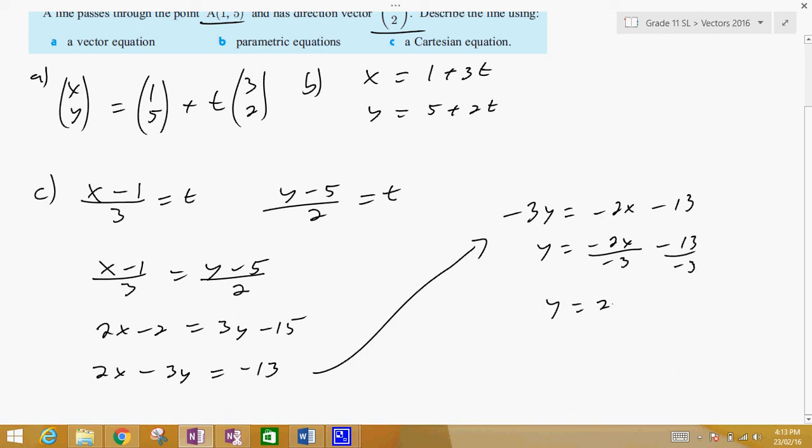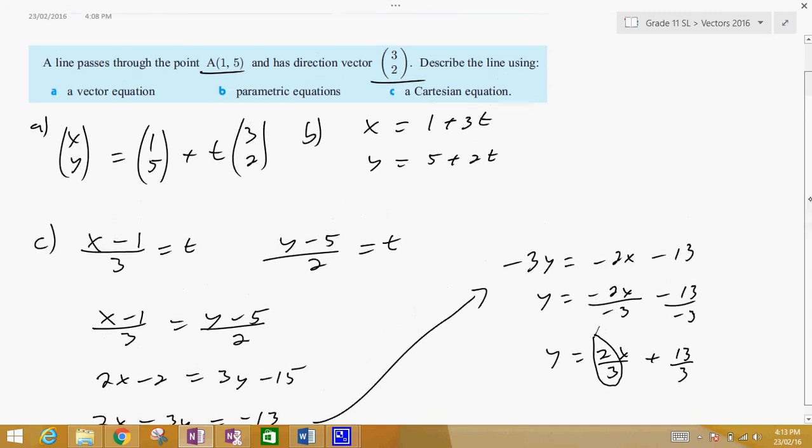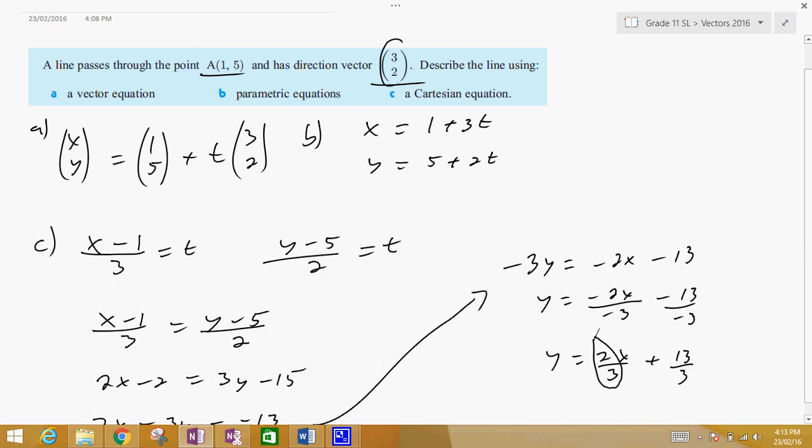And something you will notice, this is 2 over 3, which is kind of the opposite of this, which is 3 over 2. Which makes sense, because if you're doing (3, 2), your direction is (3, 2), well, your slope is rise over run. So you're rising by 2 and you're running by 3. So anytime it asks for what is the slope, you could look at the direction and just flip it, and that would be your slope.